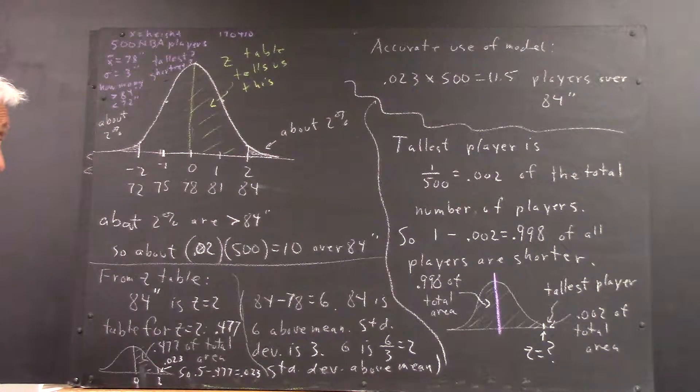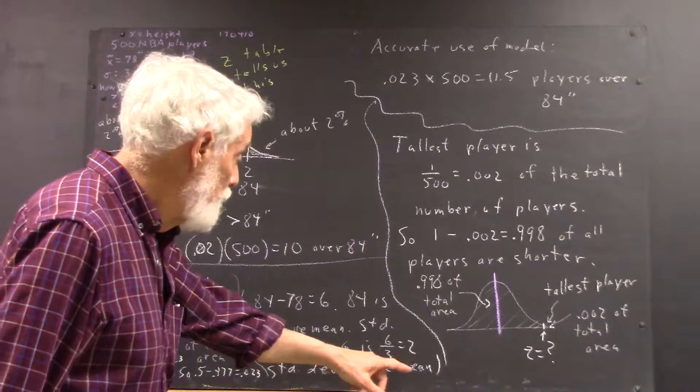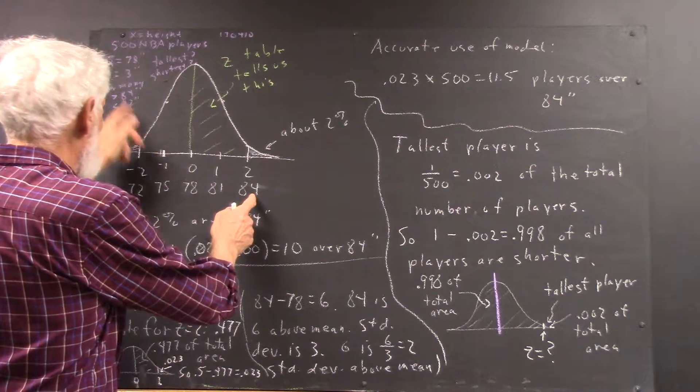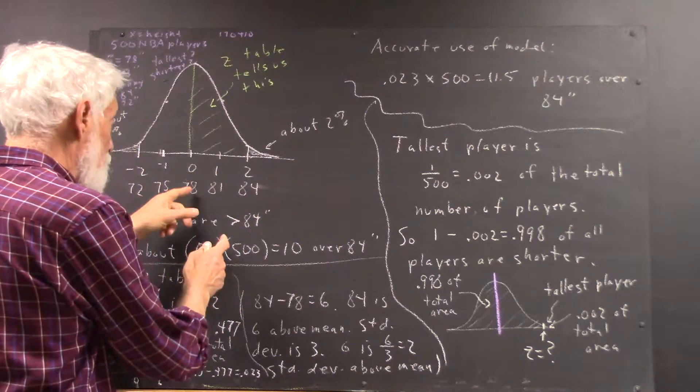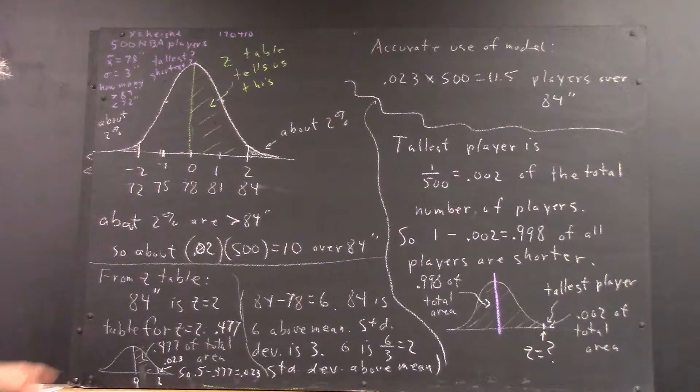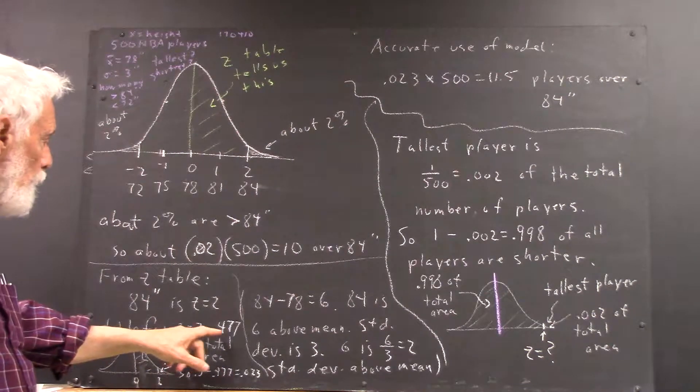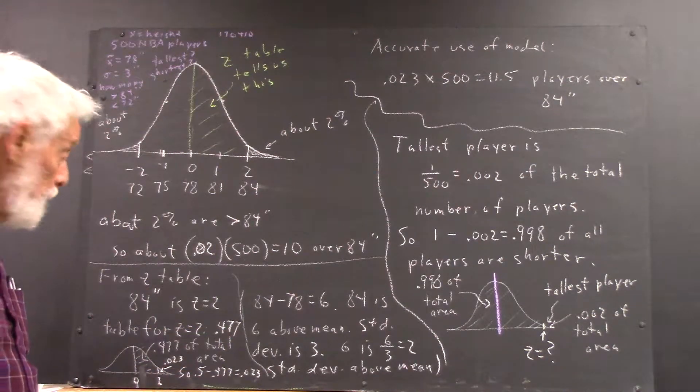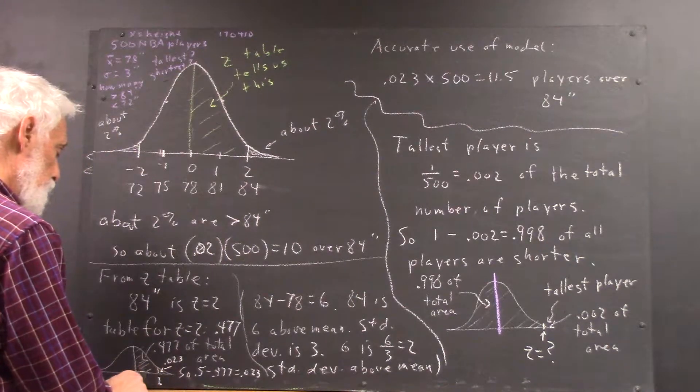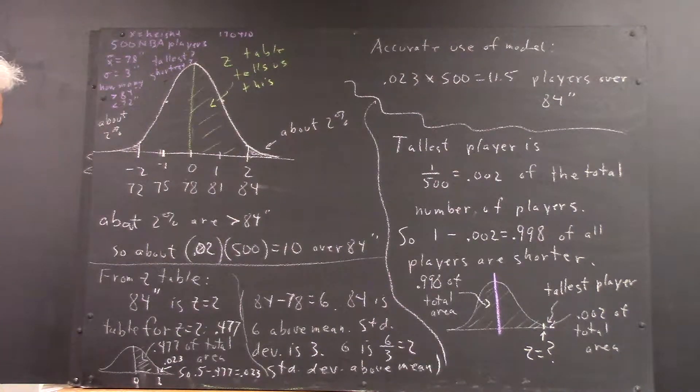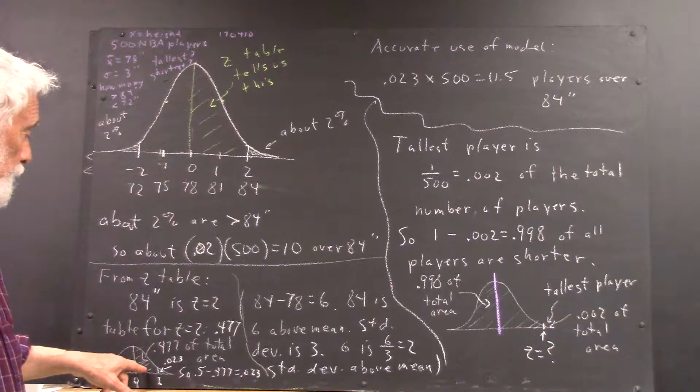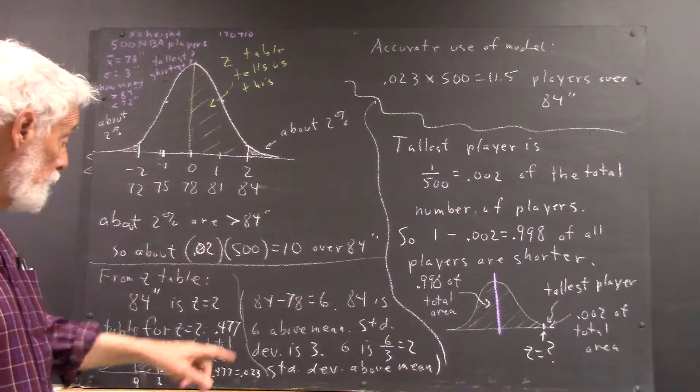This is how you would calculate that 84 inches is at z equals 2. 6 inches from here to here. Divide that by the standard deviation. It's 2 standard deviations from the middle, so it's z equals 2. The table for z equals 2 gives us 0.477. What does the table tell us? You always have to keep in mind that the table gives us the area between the middle and a given z value. Between the middle and z equals 2, we have 0.477, or 47.7% of the total area.